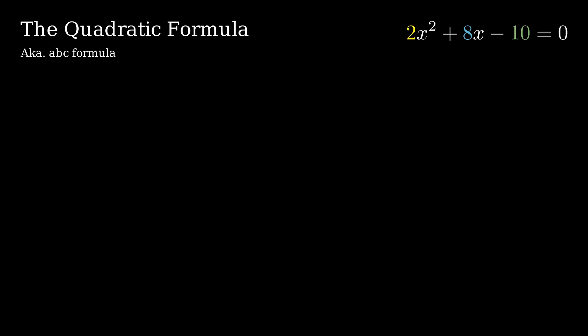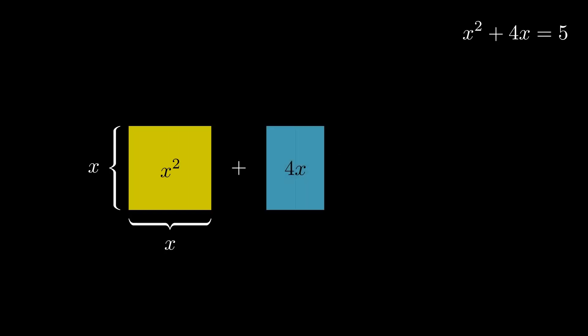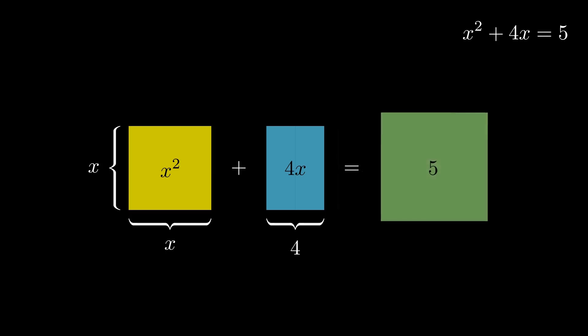First of all, we can simplify this equation by dividing both sides by 2 and then we can rearrange the equations. The first term, x squared, can be visualized as the area of a square with the width and height equal to x. Similarly, the second term, 4x, can be visualized as a rectangle with the width of 4 and the height of x. According to this equation, the area of the yellow square plus the area of the blue rectangle should equal to 5.